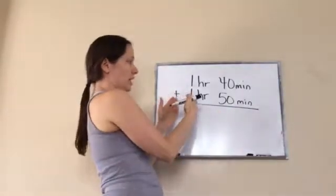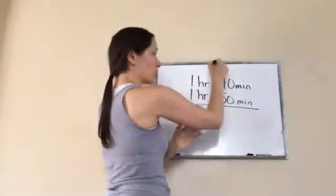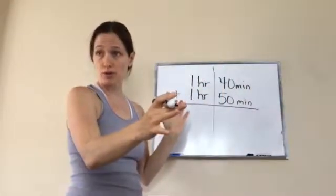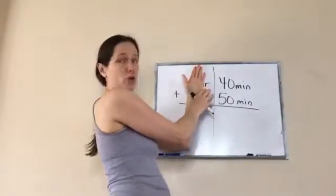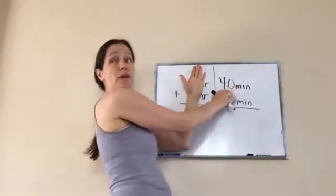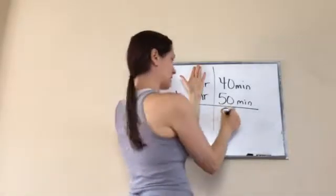Whenever you're doing hours and minutes, you need to completely see them as different numbers. So let's talk about the minute side first. Don't worry about the hours. 50 minutes plus 40 minutes makes 90 minutes.